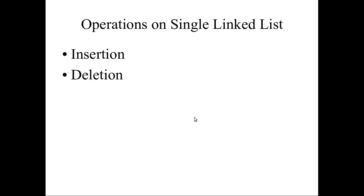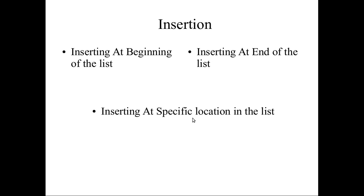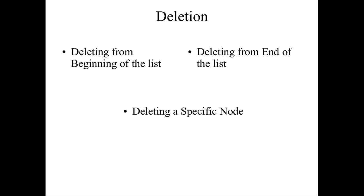There are two main operations: insertion and deletion. Insertion can be done in three ways — at the beginning, at the end, and at a specific location between any two nodes. Similarly, deletion also has three types — deletion at the beginning, at the end, and at a specific node. In the next video, we will see insertion and deletion operations in detail.